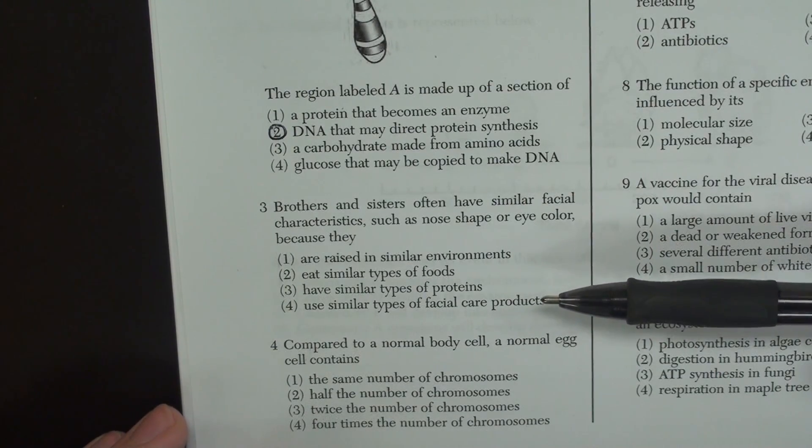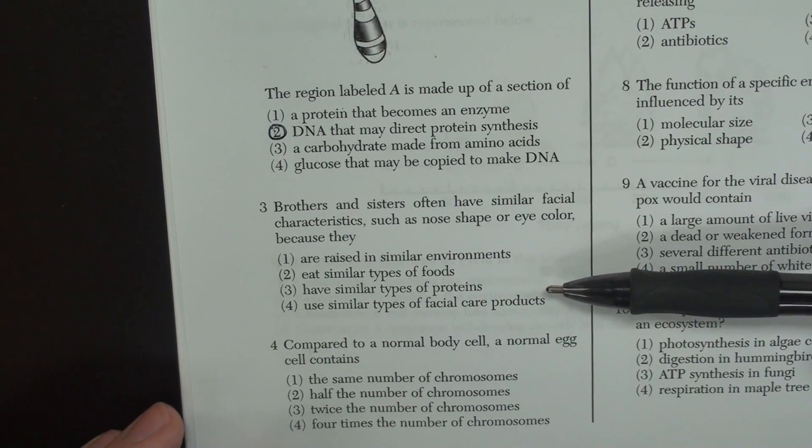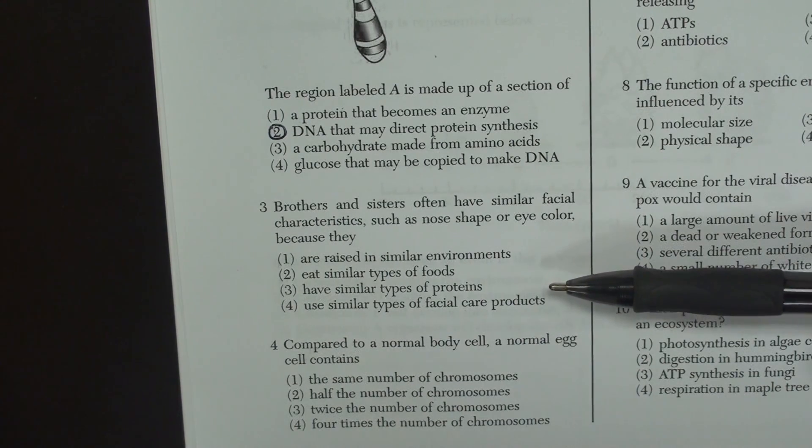Now if we look at number three, it says have similar types of proteins. Now you've got to think back and say, okay, I know about DNA. The whole big thing about DNA is that it codes for proteins.